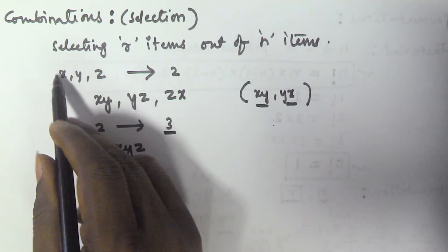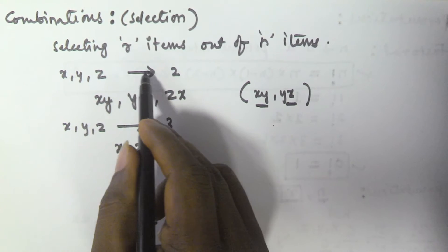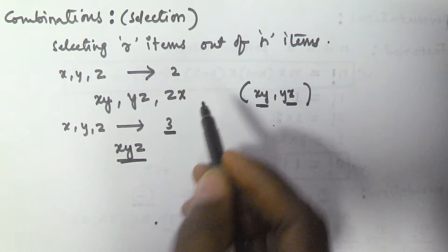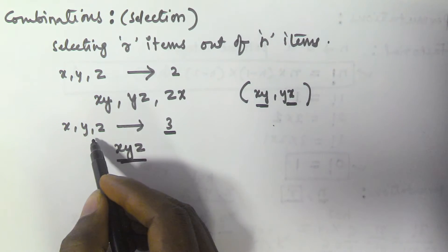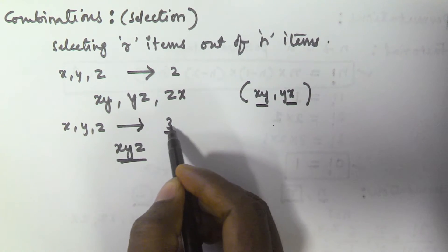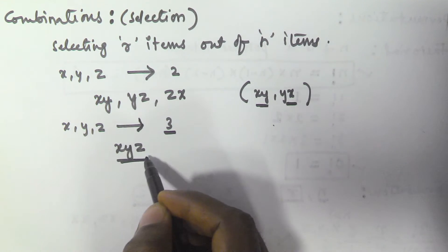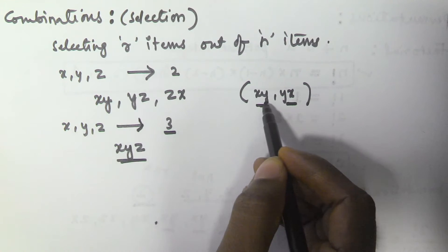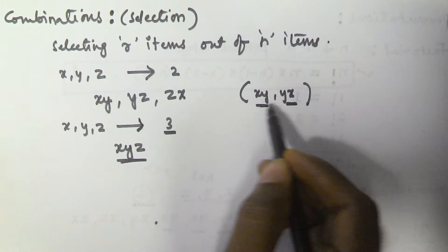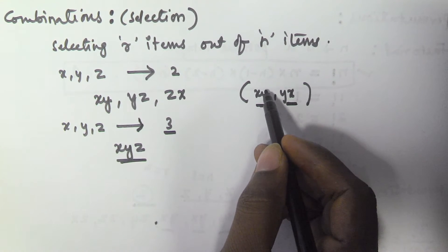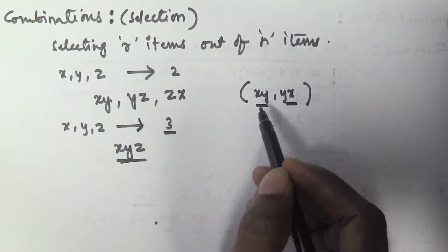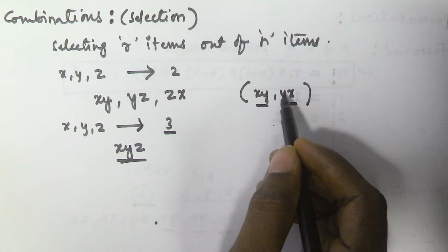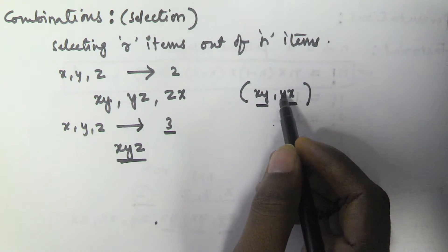If there are three items x, y, z and we want to select two items, the possible selections are x,y, y,z, and z,x. If we want to select three items at a time, the possible selection is x, y, z. In combination, x,y and y,x are the same because order is not important, whereas in permutations order is considered and x,y and y,x are different.